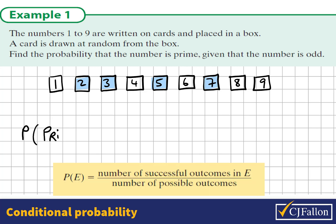So we want the probability that the number drawn is prime given that it is odd. So we know it is an odd number already. Let's just circle the odd numbers here. So we have 1, 3, 5, 7, and 9. We know it's one of these numbers. One of these 5 numbers has been drawn.